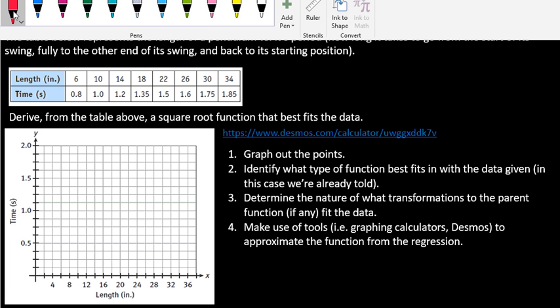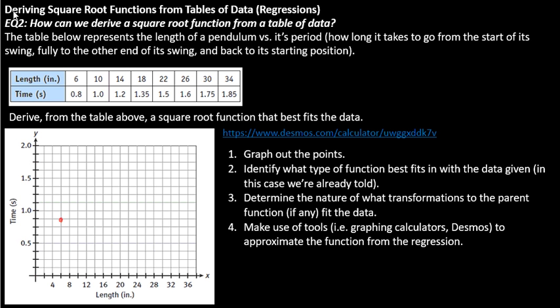I'm going to go ahead and plot these points, and you're going to see how annoying and cumbersome this is. So: 6 by 0.8, 10 by 1.0, 14 by 1.2, 18 by 1.35 — that would be about right here — and 22 by 1.5, so it kind of jumps up there, and 26 by 1.6.